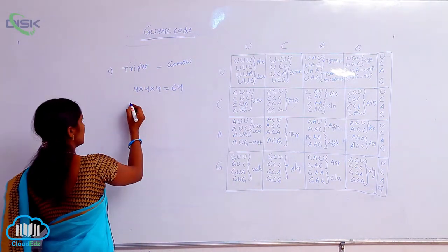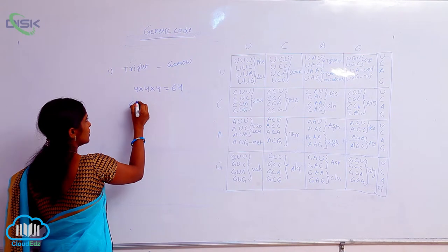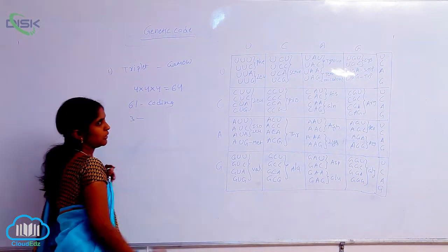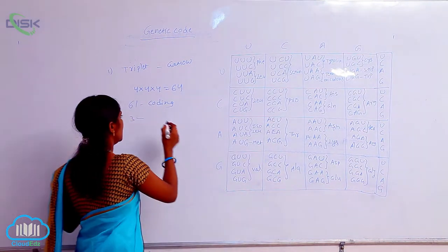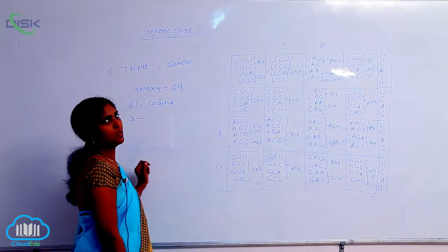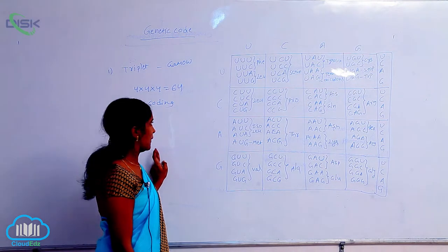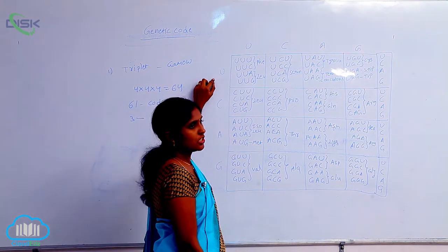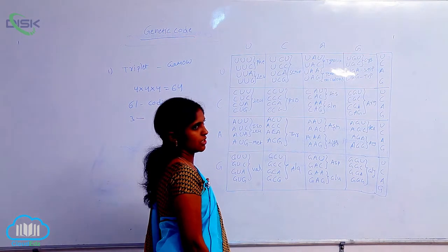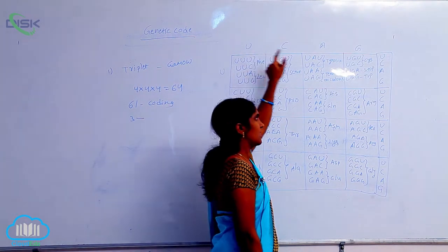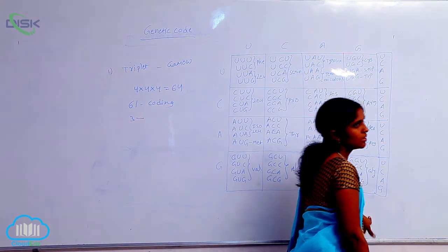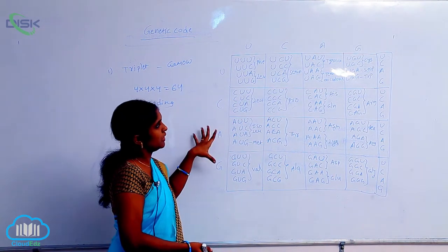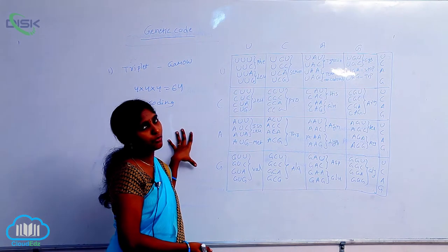Out of 64 codons, 61 codons are coding codons and 3 are non-coding — they are termination or non-coding sequences. In the table, the first position has U, C, A, G; the second position and third position are also given. According to them, they constructed the table of 64 codons.